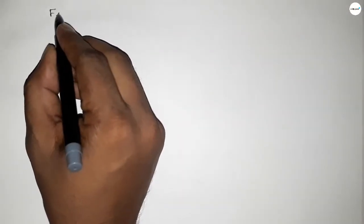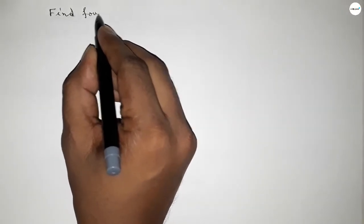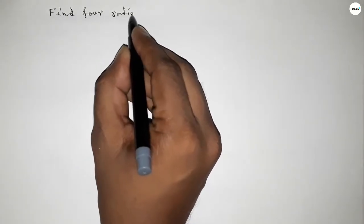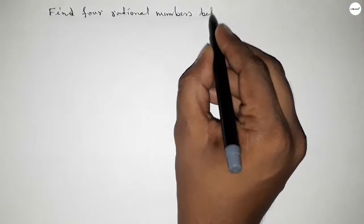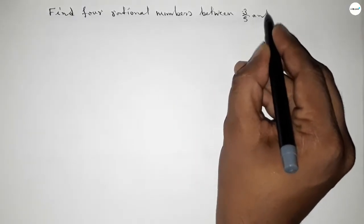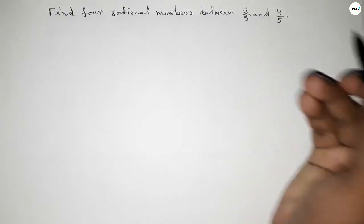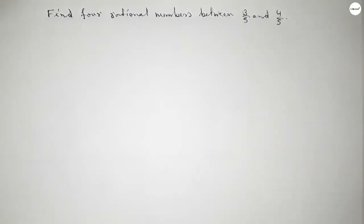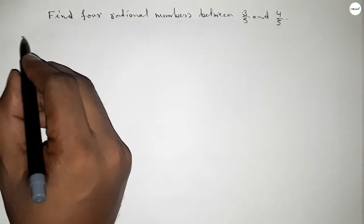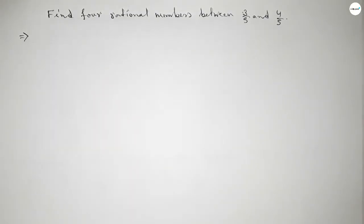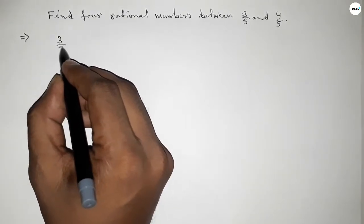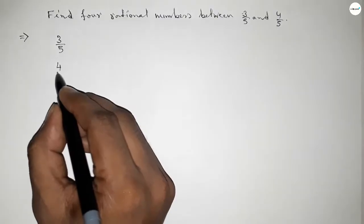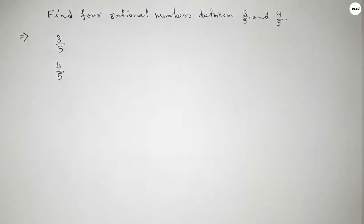Hi everyone, welcome to SSJ Classes. Today in this video we have to find four rational numbers between 3 over 5 and 4 over 5. So let's start the video. First of all, write down the given numbers: 3 over 5 and 4 over 5.